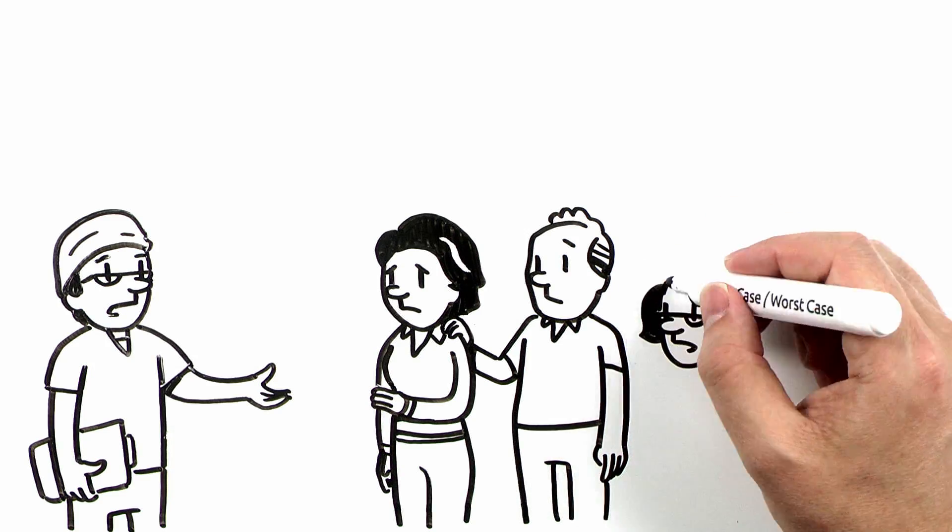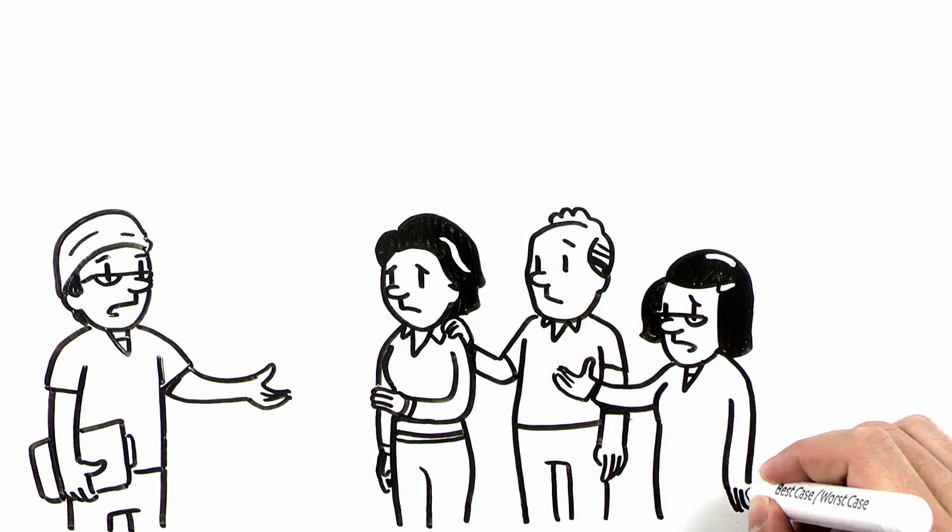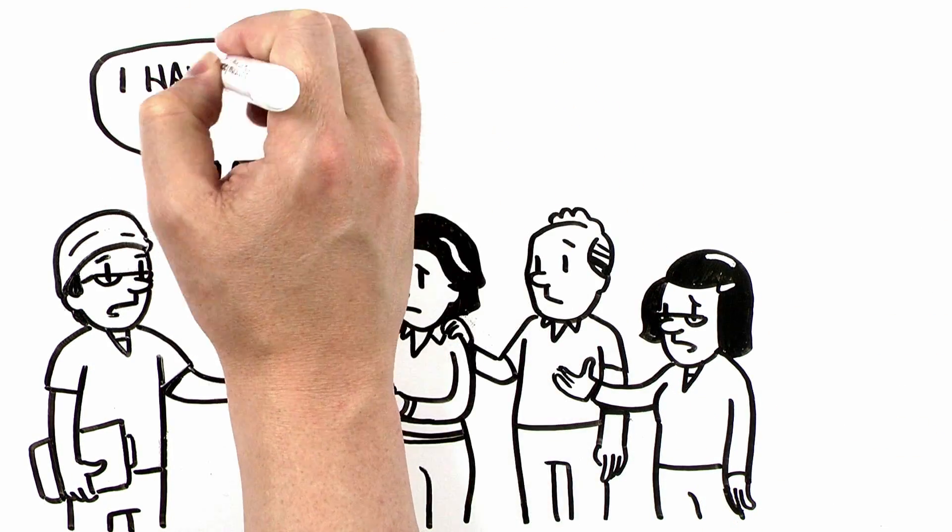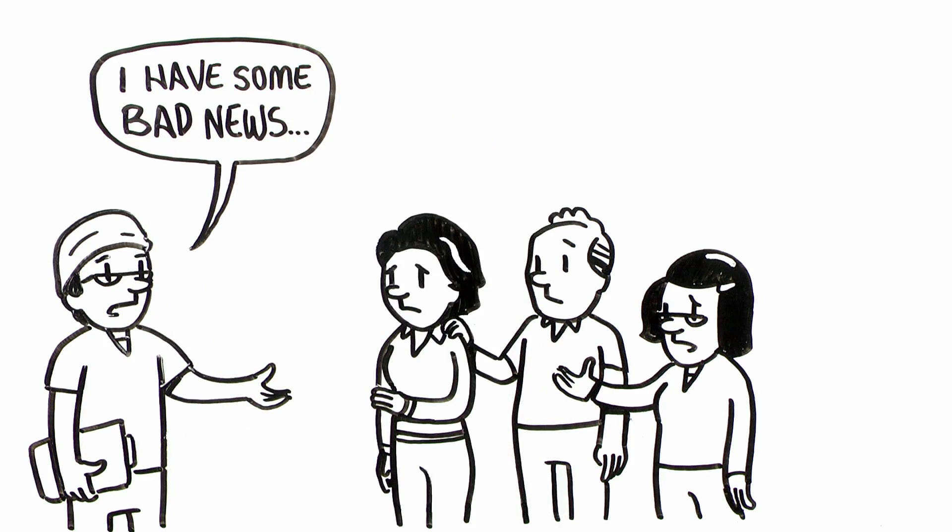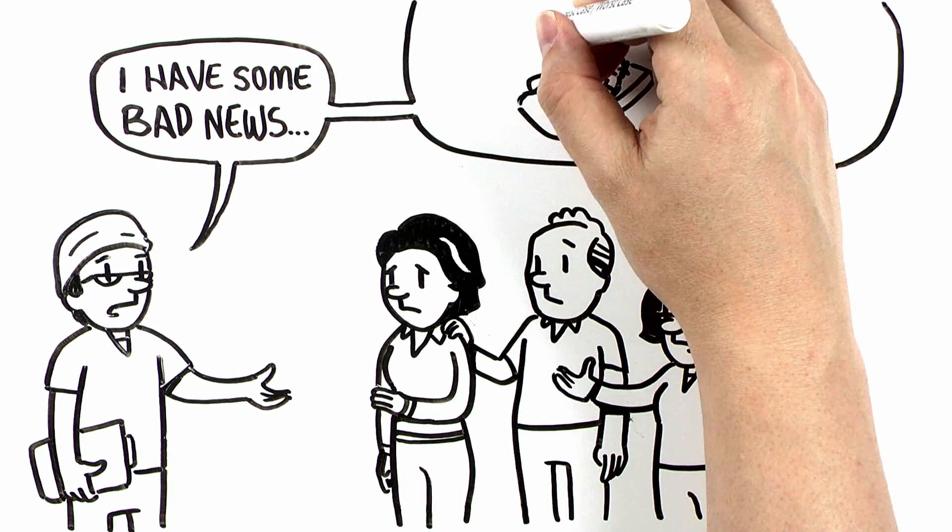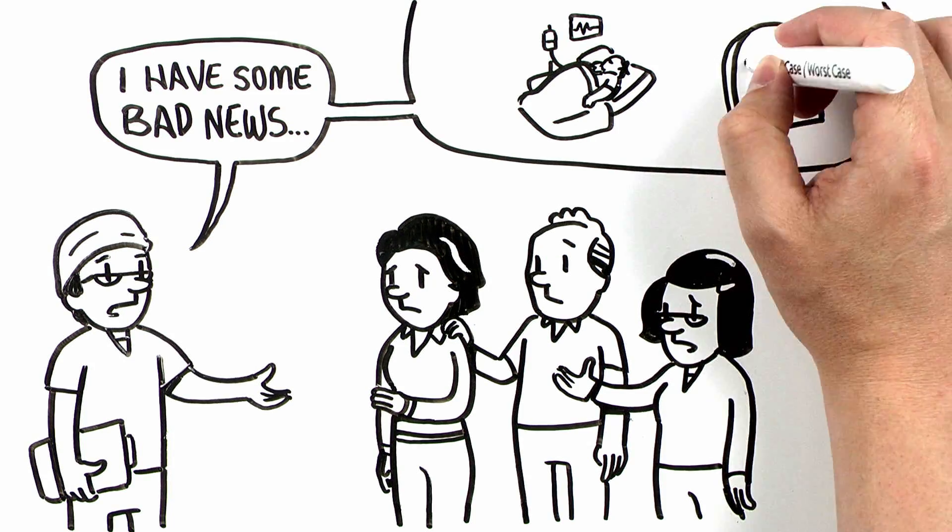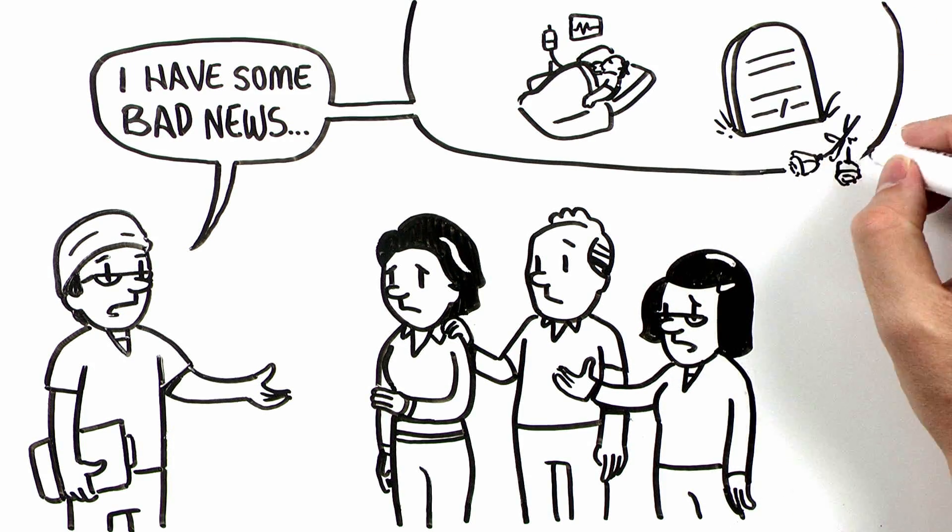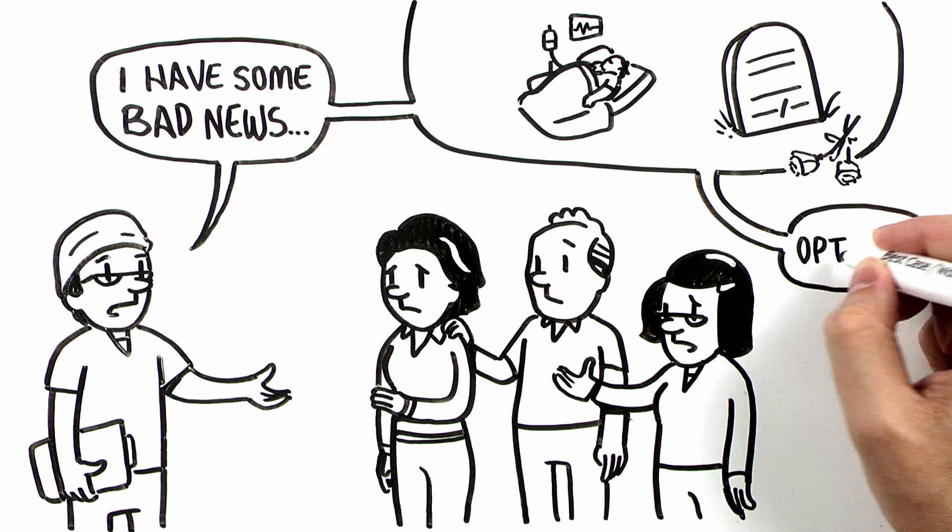It is essential to clearly announce that he is very ill. You might say something like, I have some bad news. Your dad has a life-threatening problem. It is going to change his life. I worry he's going to die, even with surgery. I want to make sure you understand the options.